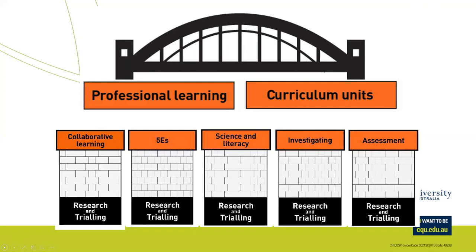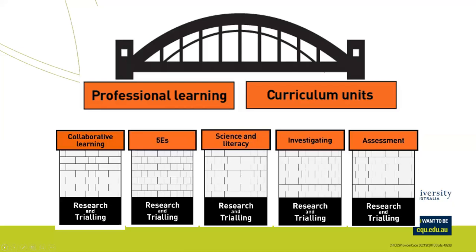When you're looking at these units, bear in mind they're all built on the same five pillars. You'll see collaboration, the five E's, science and literacy, investigation, and assessment all talking to the 5E model. Scientific literacy — as Dennis Goodrum bangs on about — is a high priority for our citizens. It's about changing the world, becoming a citizen in the Aristotelian sense — an informed decision maker. Our three strands come together: having science understanding, having inquiry skills, and picking it up as a human endeavor.